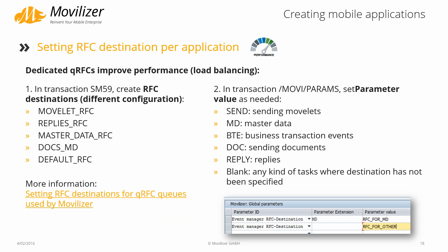To better scale the load that the Movilizer for SAP connector puts on the system, you can provide specific RFC connections that will be used to handle the RFC queues used by the Movilizer. You can define RFC queue names based on the area of the Movilizer — so you can have a specific connection for sending movlets, a specific connection for master data, for BTE events, etc.